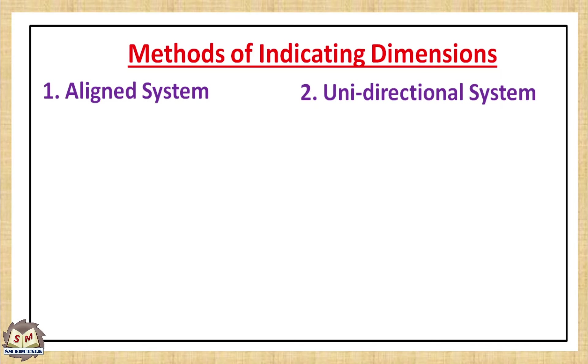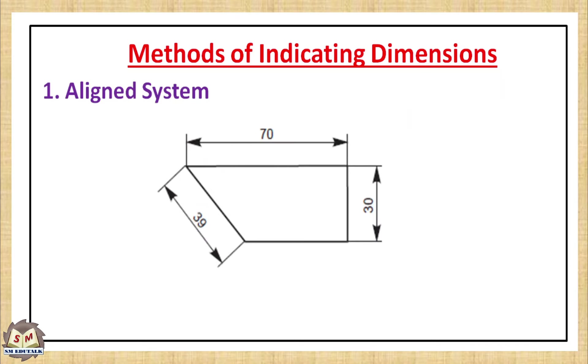What is aligned system? Dimension text should be placed parallel to their dimension lines and preferably near the middle and above the dimension line. Dimension text may be written so that they can be read from the bottom or from the right side of the drawing.